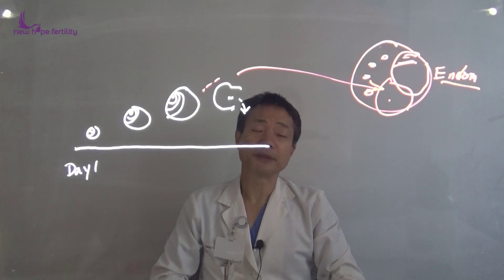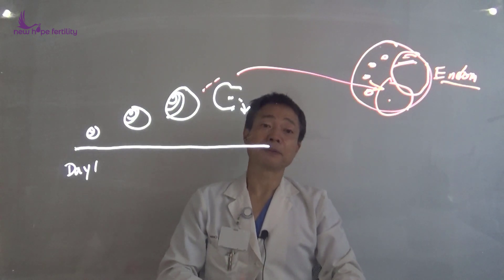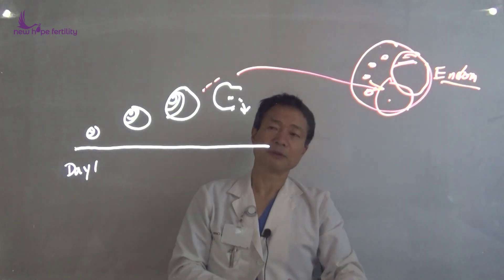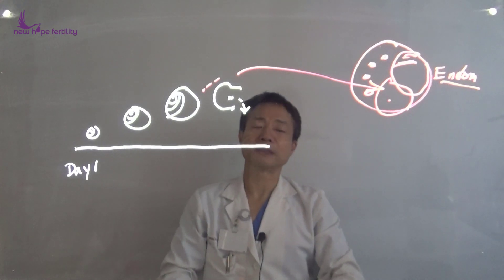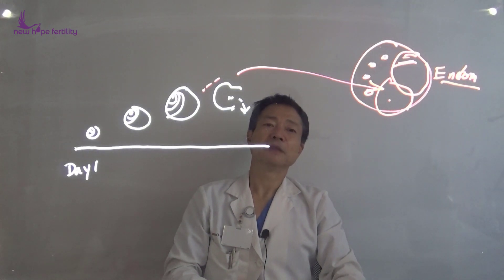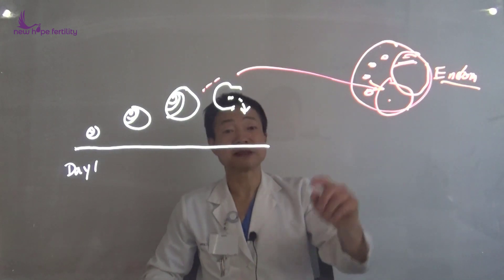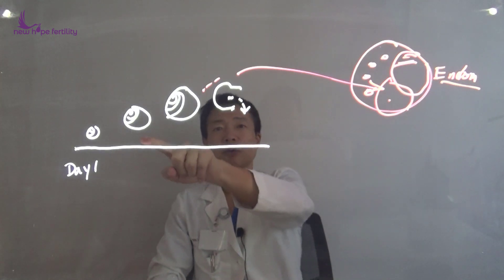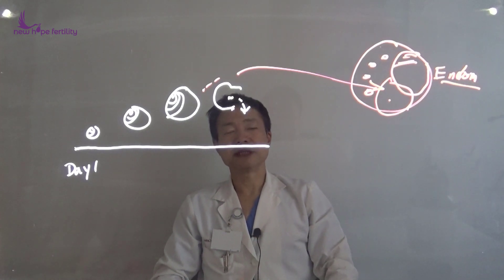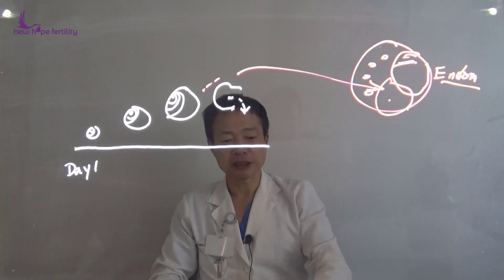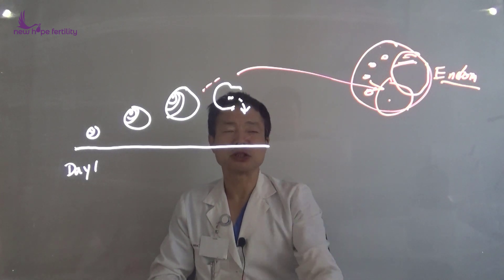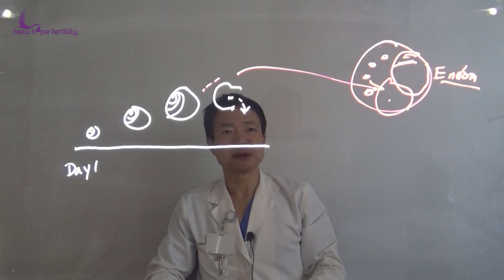For patients with low ovarian reserve, sometimes the brain may make the follicle grow but forgets to ask the ovary to release the egg, and that becomes a cyst. So when a lady with low ovarian reserve or perimenopausal women sees cysts, that's a good sign. At least they're producing eggs. Then we need some medication to coordinate the two hormones to ensure eggs mature properly to produce eggs.